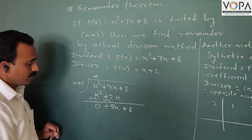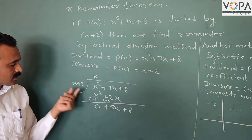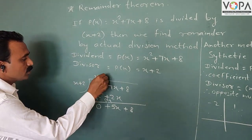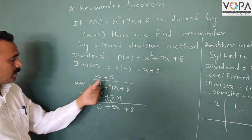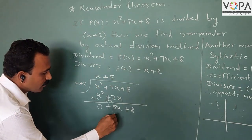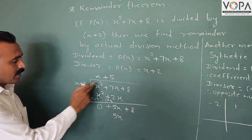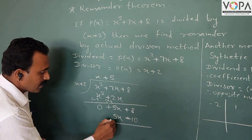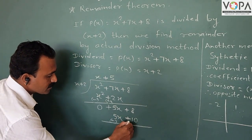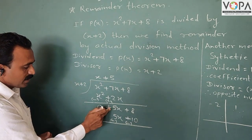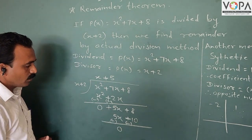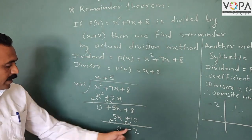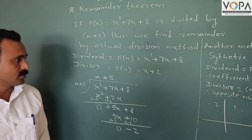The next term is 8. Now 5x divided by x gives quotient 5. Then 5 multiplied by x is 5x, and 5 multiplied by 2 is 10. Then sign opposite: minus 5x and minus 10. 5x minus 5x is 0. Then 8 minus 10 gives minus 2. Therefore the remainder is minus 2.